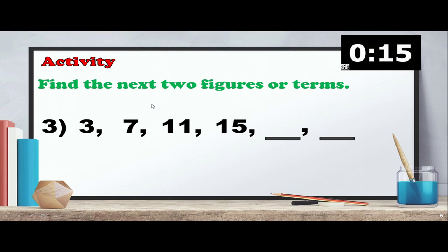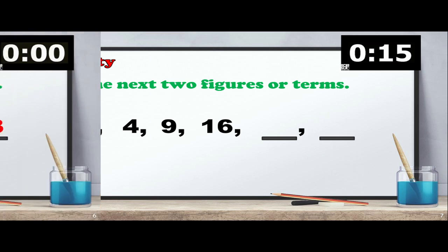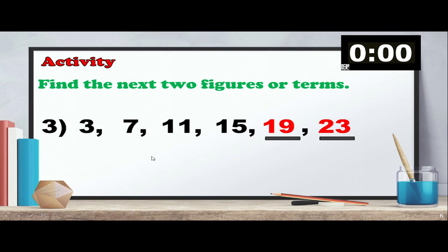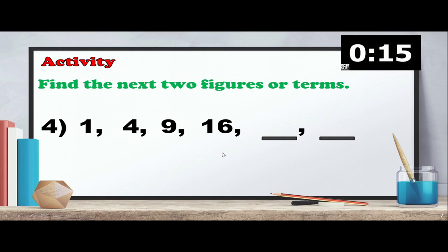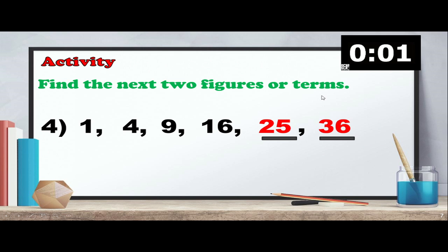For number 3, find the next two figures or terms. The correct answer is 23 and 19 — we'll discuss this later. For number 4, the sequence is 1, 4, 9, 16, blank, blank. The answer is 25 and 36. We'll discuss why later.